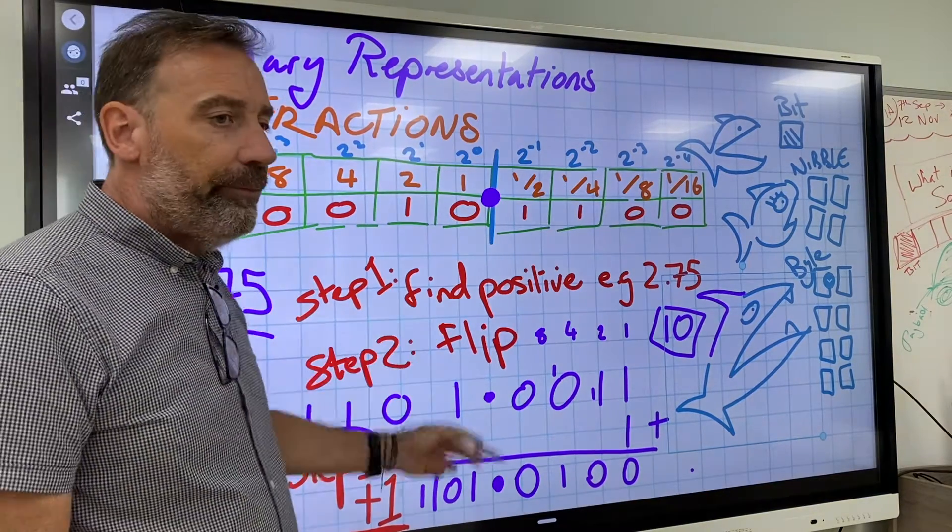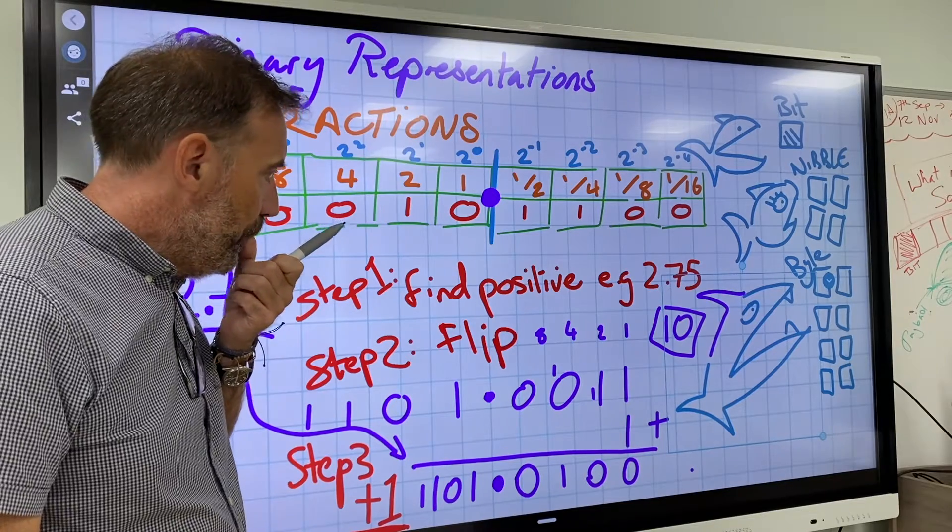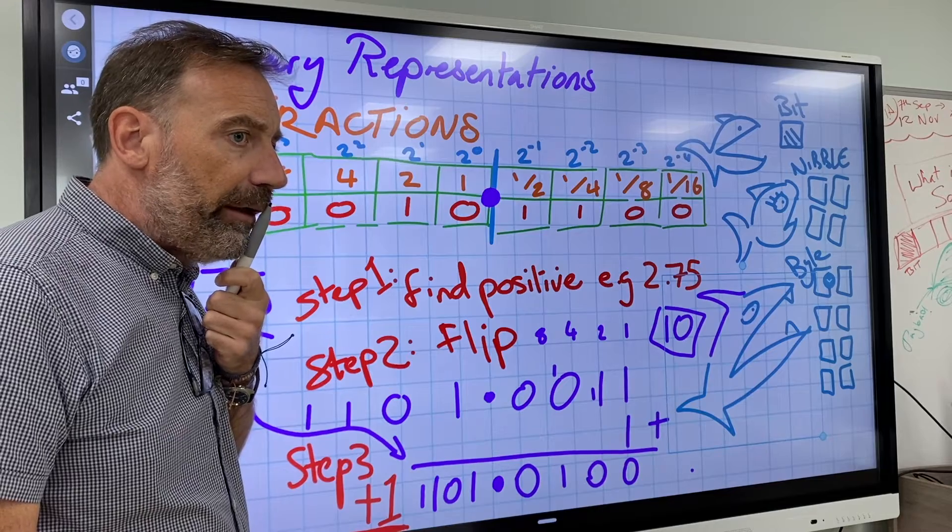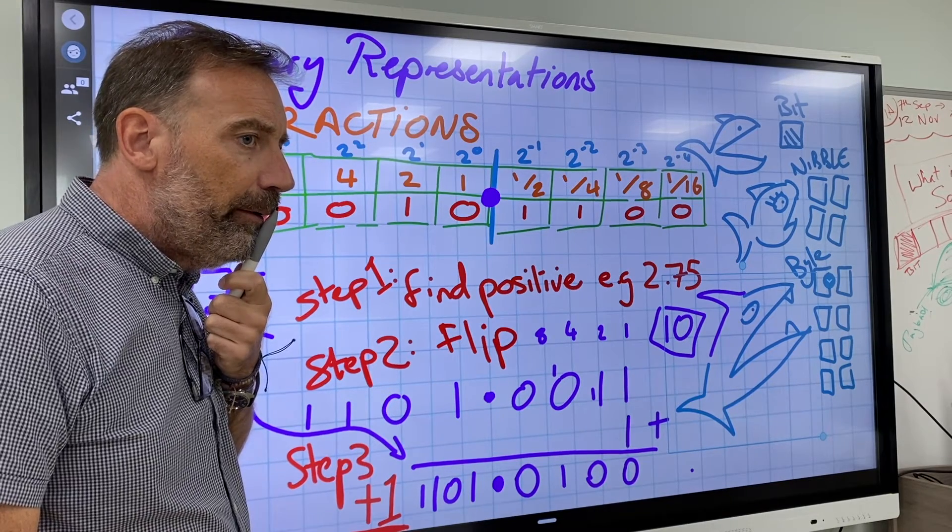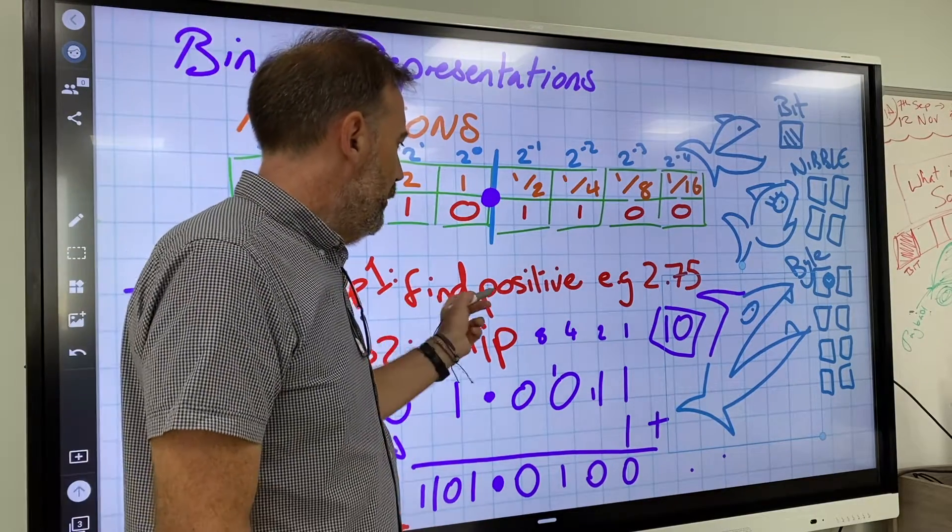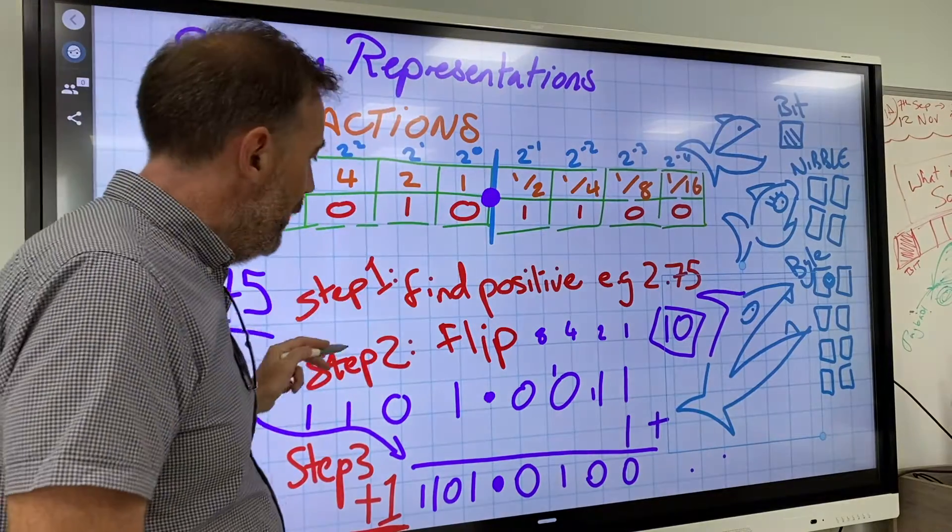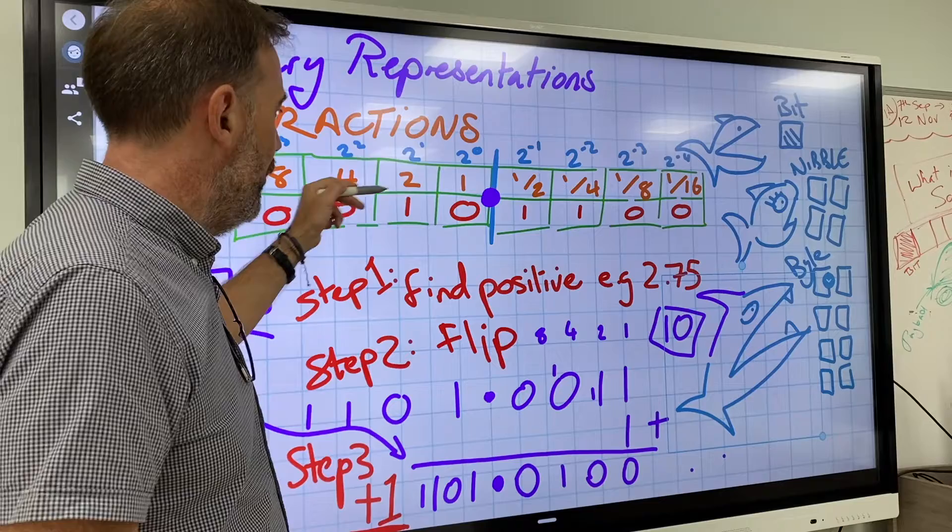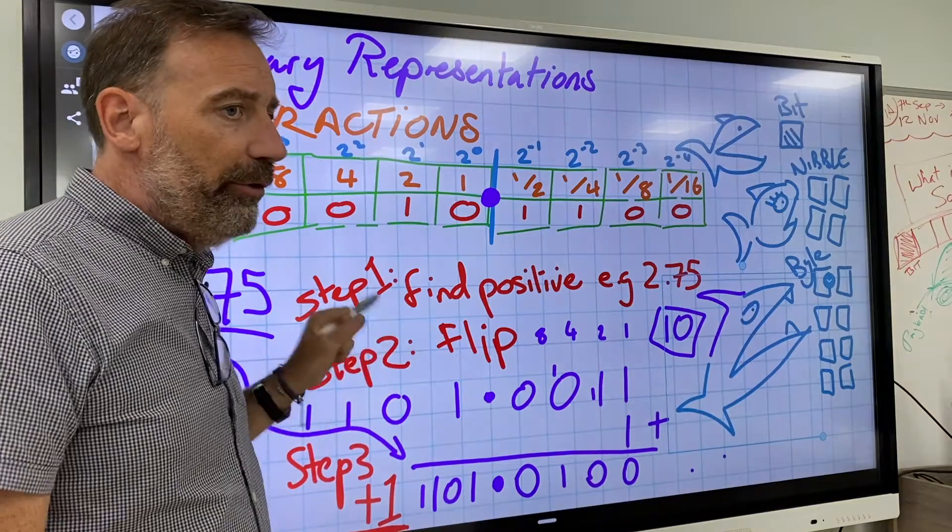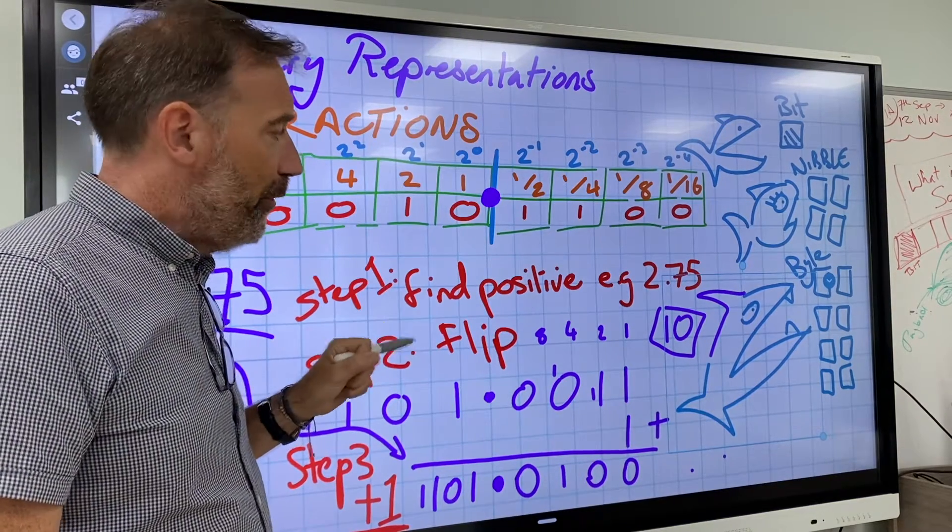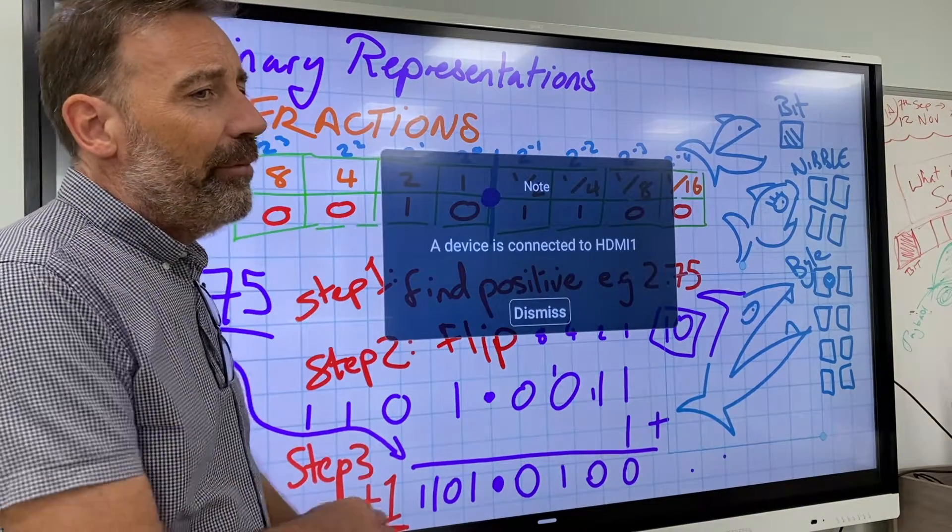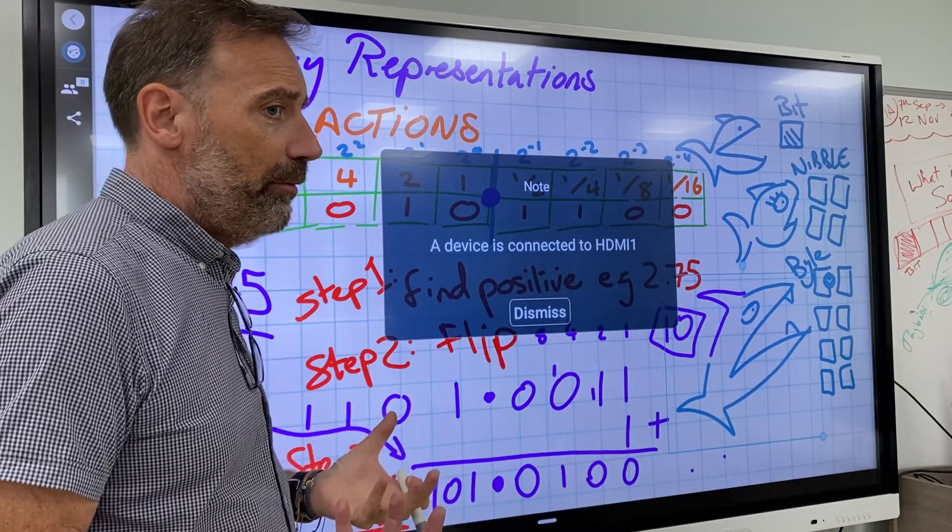So our negative 2.75 is 1101.0100. We've got to follow this method. Step 1: Find the positive value. Step 2: Flip it around, reverse them, turn the 0s into 1s and the 1s into 0s. Step 3: Add a 1 to it. You can try this in normal binary and see if you come out the same.